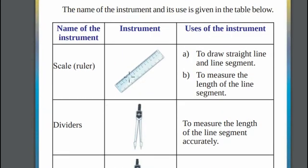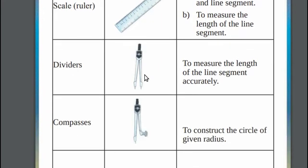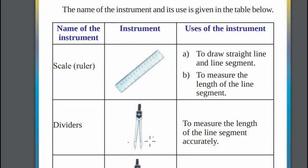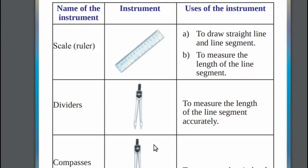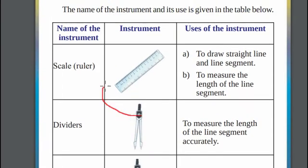Scale is used to draw a line segment and also used to measure the distance between two points. Dividers are generally used to find the distance between two points. Once you place the dividers at two points, you can then place the divider on a scale or a ruler and find out the distance between these two points.